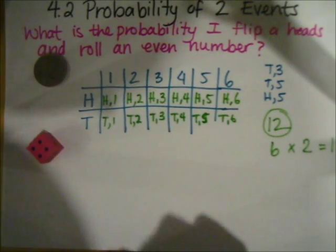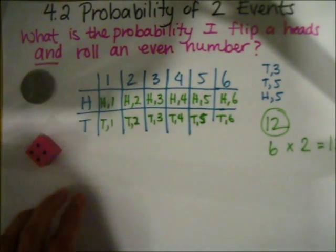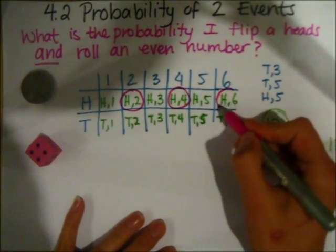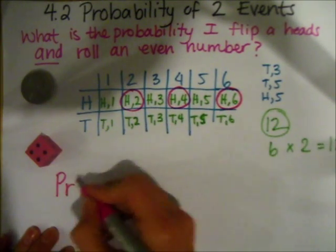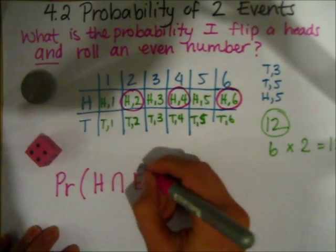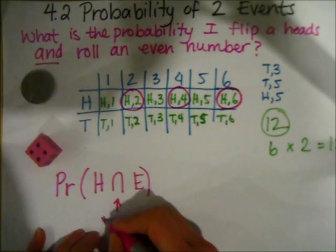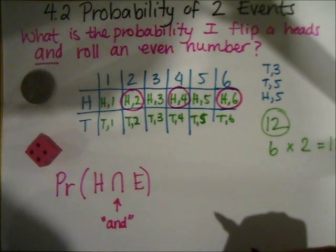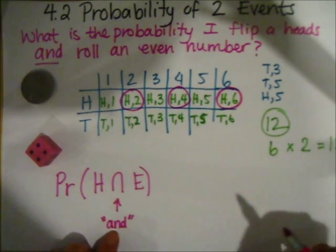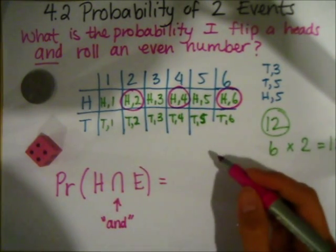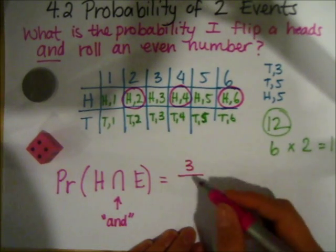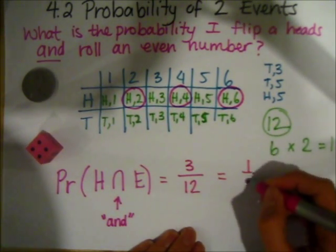My original question was: what is the probability I flip heads and roll an even number? Looking at the diagram, heads and an even number gives heads and two, heads and four, and heads and six — three outcomes. So the probability of heads and an even number is three out of 12, which gives me one quarter.